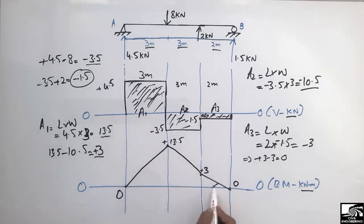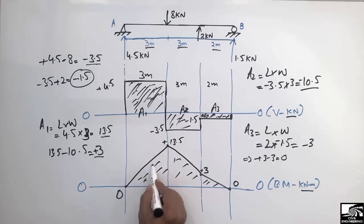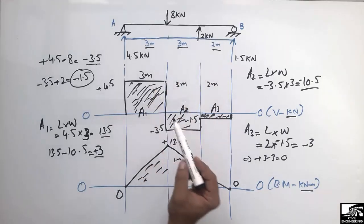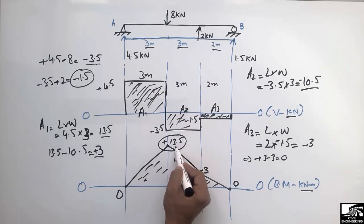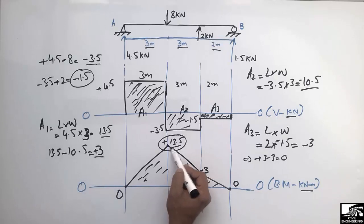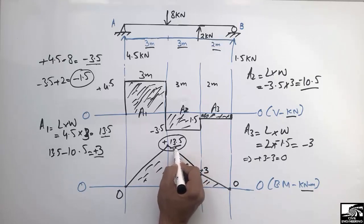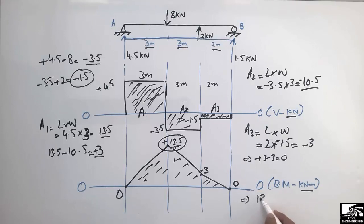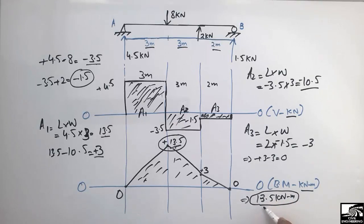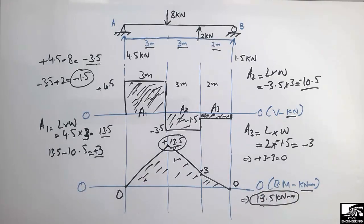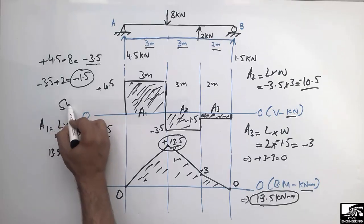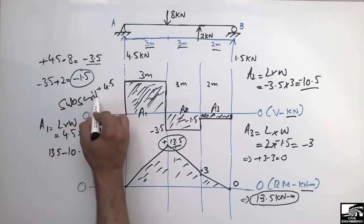This is the complete bending moment diagram for this beam with two concentrated loads. The maximum bending moment is 13.5 kNm, occurring at the location of the 8 kN load. We should design our beam for this maximum bending moment value of 13.5 kNm and provide reinforcement accordingly. Hope you understand how to draw the shear force and bending moment diagram. Don't forget to subscribe to our channel.